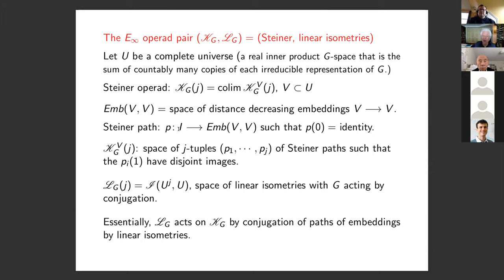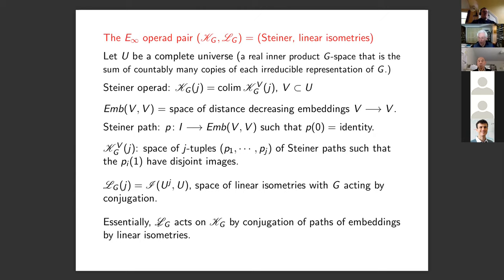The Steiner operad is defined using spaces of distance-decreasing embeddings. A Steiner path is a path into an embedding space starting at the identity, and K-V of J is the space of J-tuples of Steiner paths whose images are disjoint at time one — making this equivalent to the equivariant configuration space of J-tuples. The linear isometries operad looks at all linear isometric monomorphisms in the universe, with G acting by conjugation, and it acts on the Steiner operad by timewise conjugation.